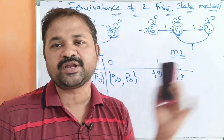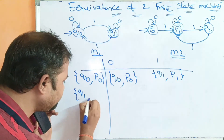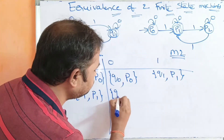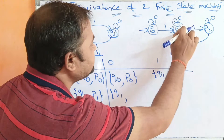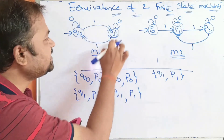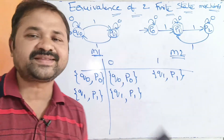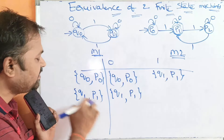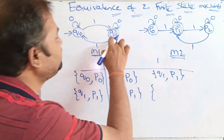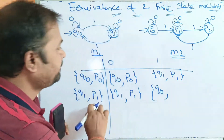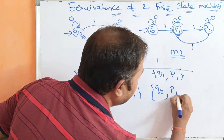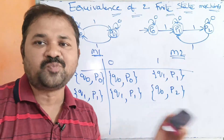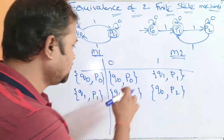Now let us apply the transitions on the new pair Q1, P1. Applying input 0: Q1 on 0 gives Q1, and P1 on 0 gives P1. Q1 is a final state and P1 is a final state, so both states are final — no problem. Applying input 1: Q1 on 1 gives Q0, and P1 on 1 gives P2. Q0 is an intermediate state and P2 is an intermediate state, so both are intermediate — no problem. Q1, P1 is now processed.